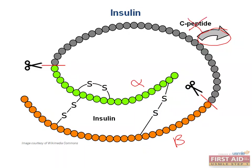So how could you be tested on this? You are likely to be given a scenario in which a patient presents with symptoms of hypoglycemia — sweating, lightheadedness, nausea, or they may be comatose — and their blood glucose levels will be very low. You need to determine whether it was an insulin-secreting tumor or the patient secretly injecting insulin. If the patient were secretly injecting themselves, the C-peptide levels should be low, while the insulin levels will be high.